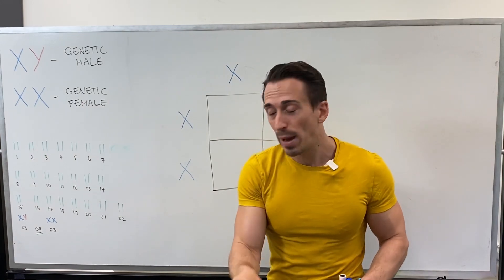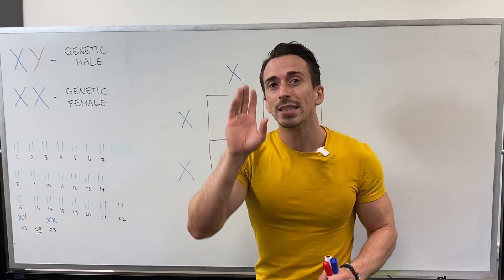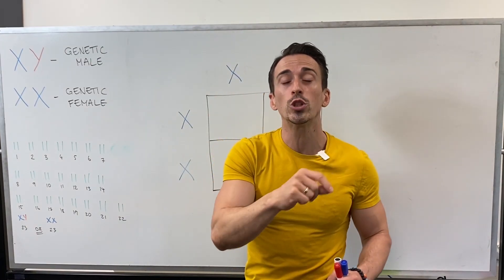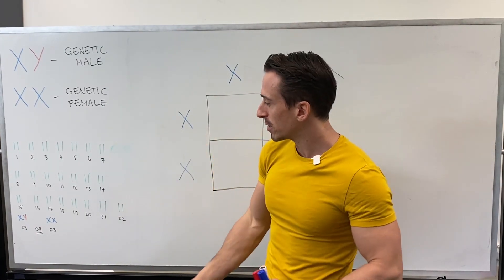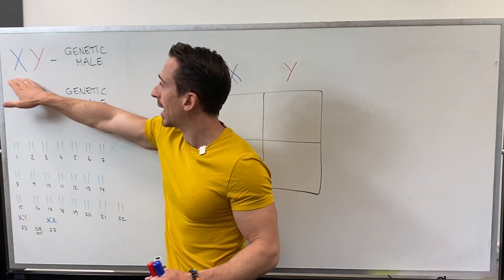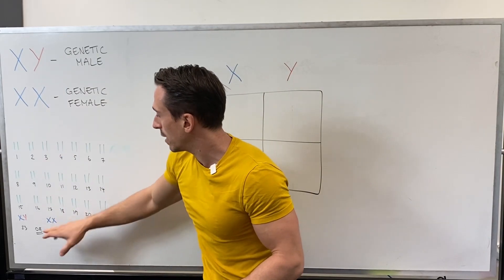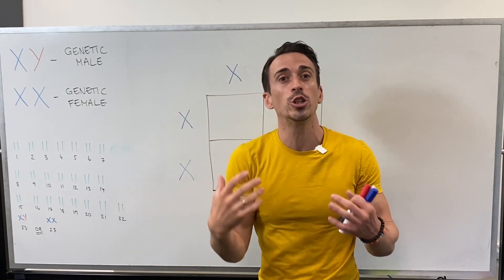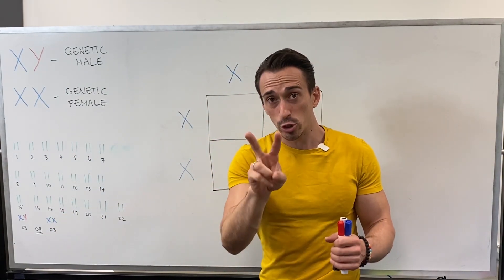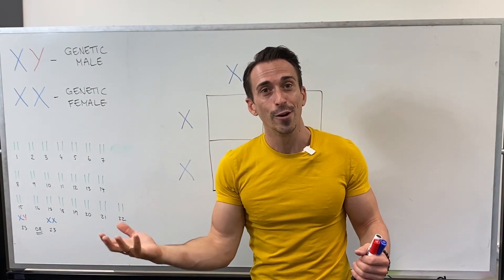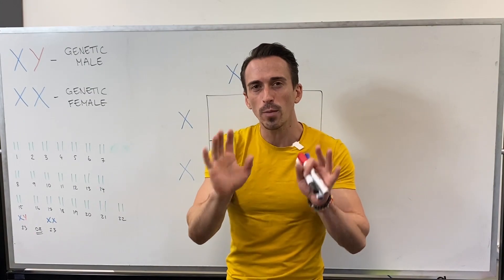But our last pair of chromosomes are our sex-linked chromosomes. They determine whether we are genetic male or genetic female. So it can either be XY, and if it is XY, we are a genetic male. It can be XX. If it is XX, it means we are a genetic female. Now remember, there's two, so that means one comes from mum, one comes from dad. So just remember that point.